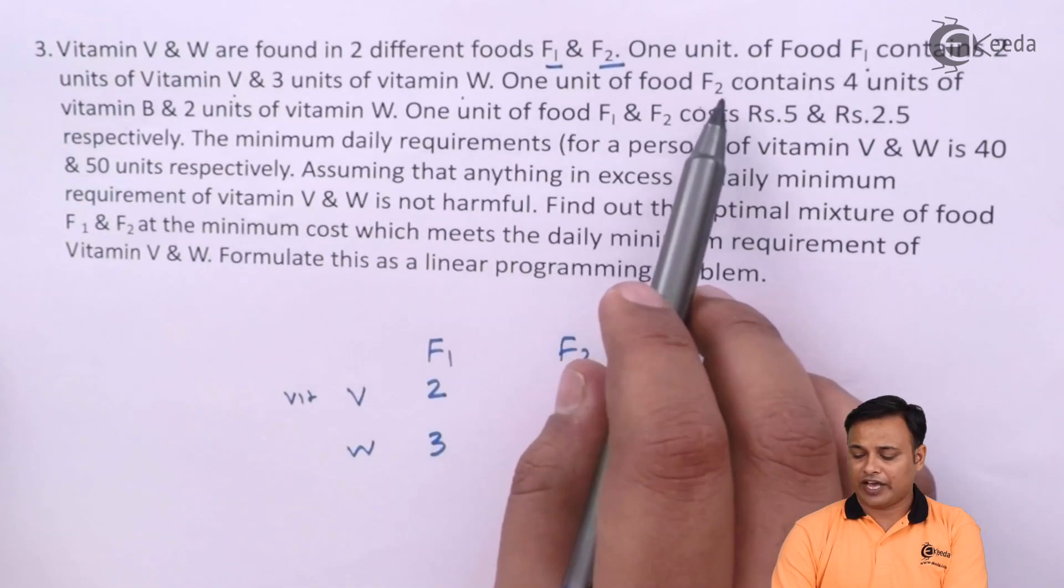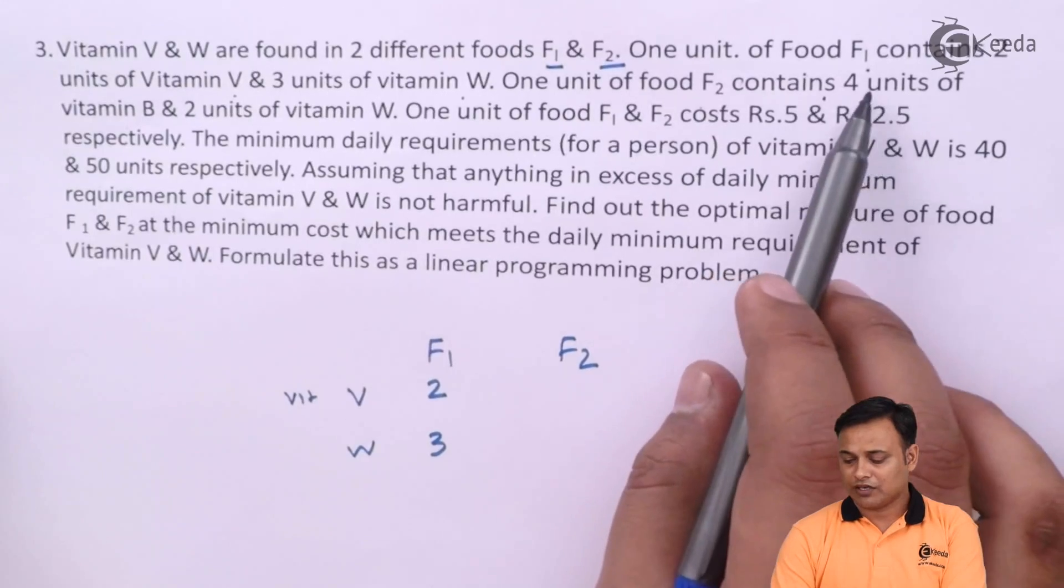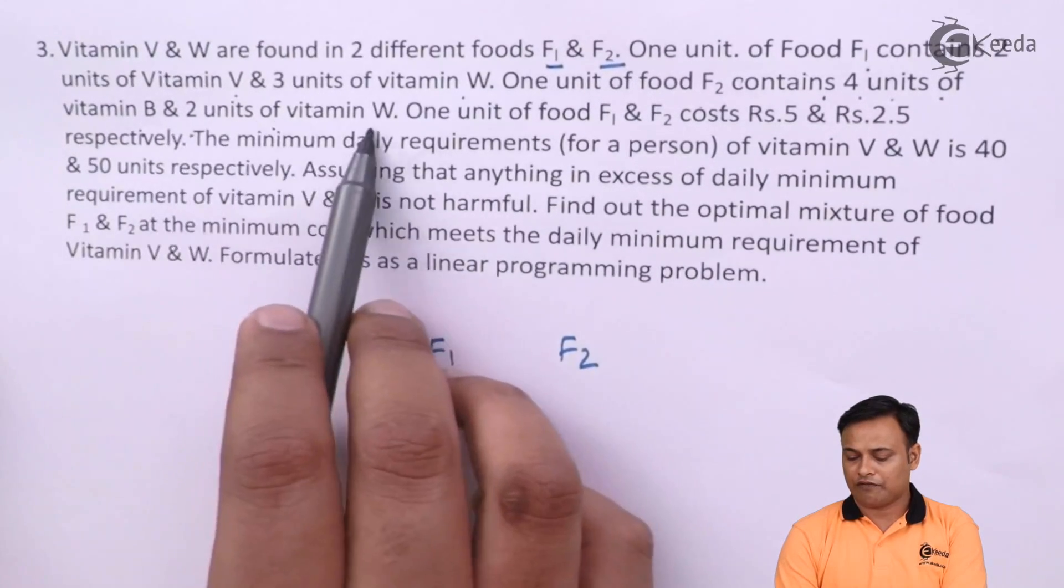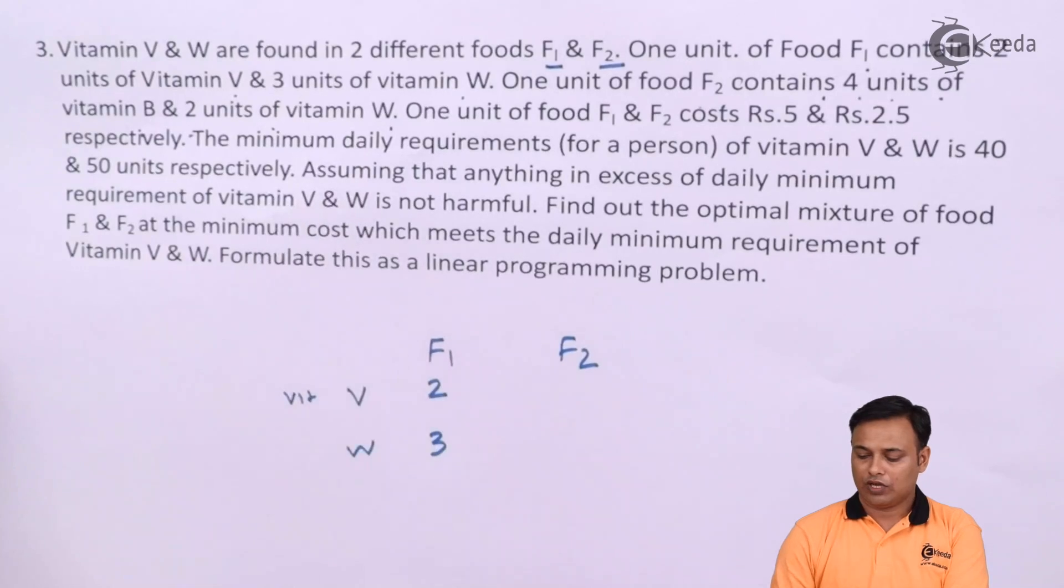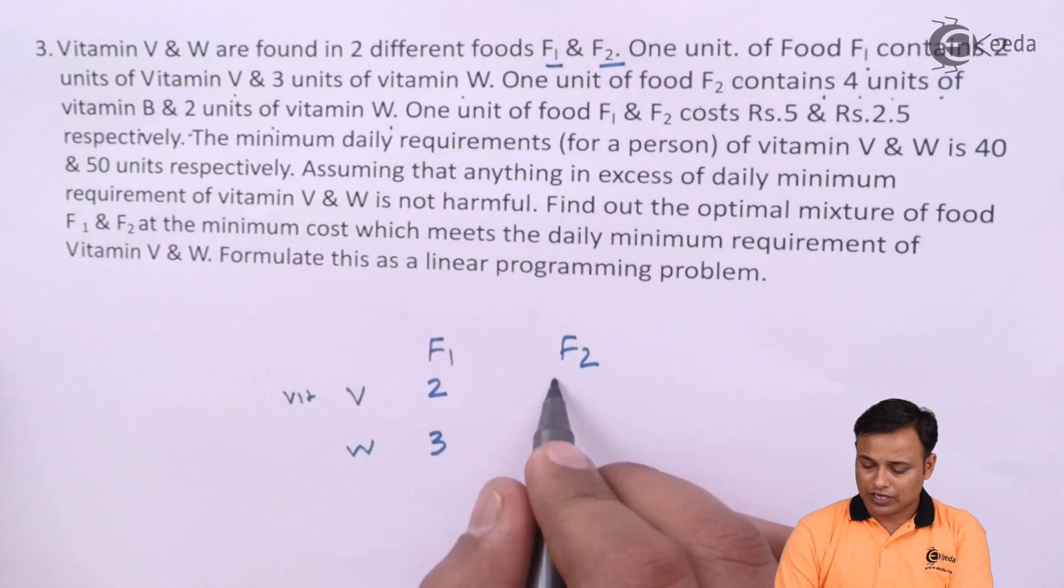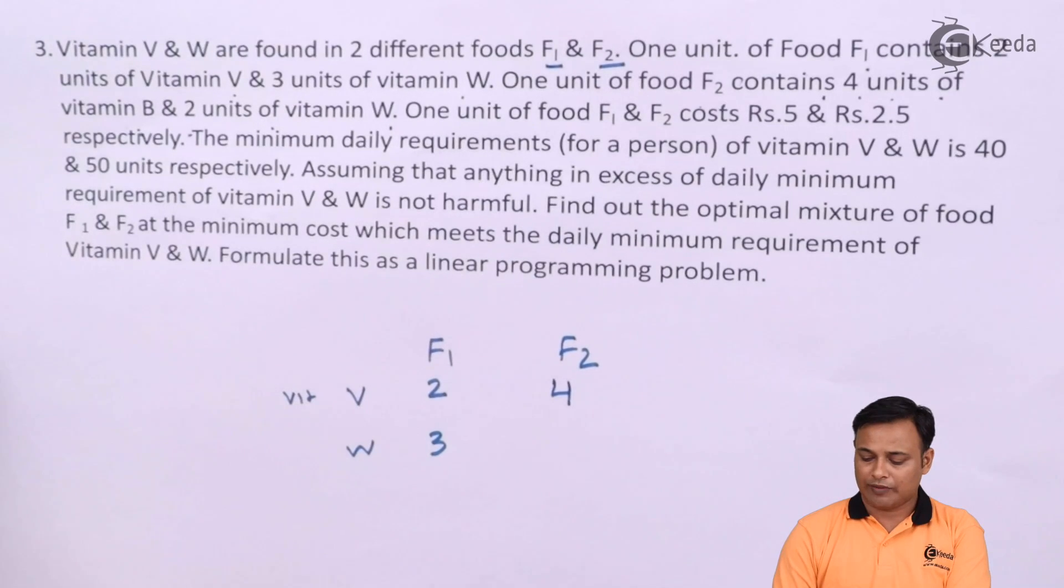1 unit of food F2 contains 4 units of Vitamin V and 2 units of Vitamin W. Food F2 means Vitamin V has 4 units or Vitamin W has 2 units.